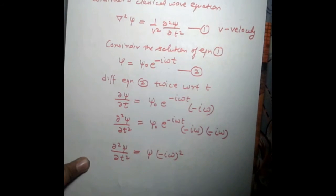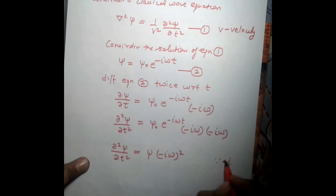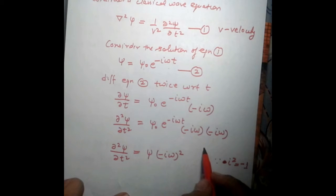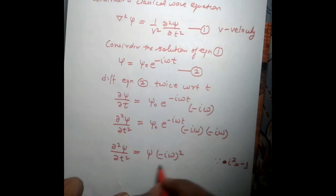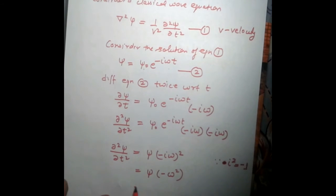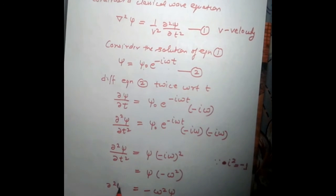Since i² = −1, the second derivative gives ∂²ψ/∂t² = −ω²ψ. This is equation three.